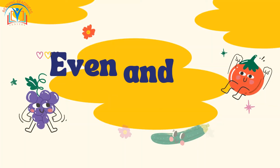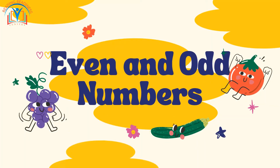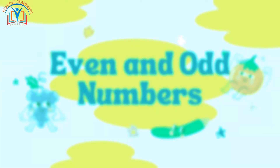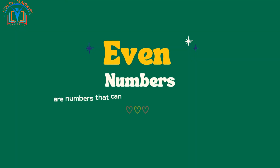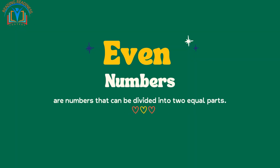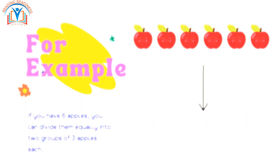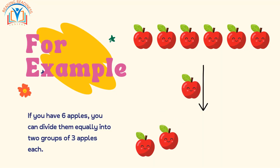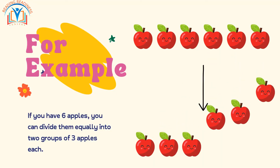Hello class! Today we are going to learn even and odd numbers, so let us get started. Even numbers are numbers that can be divided into two equal parts. For example, if you have six apples, you can divide them equally into two groups of three apples each.